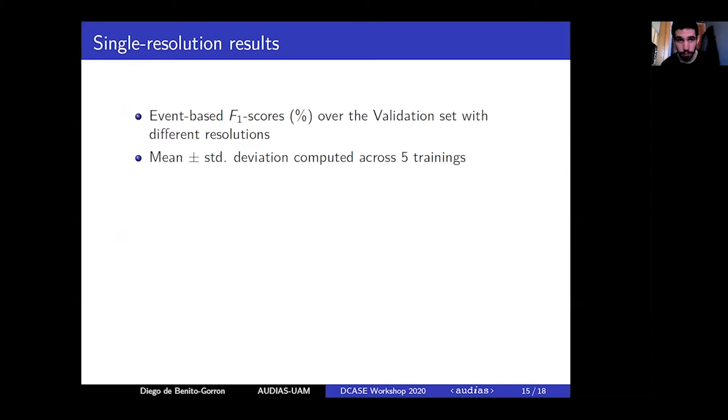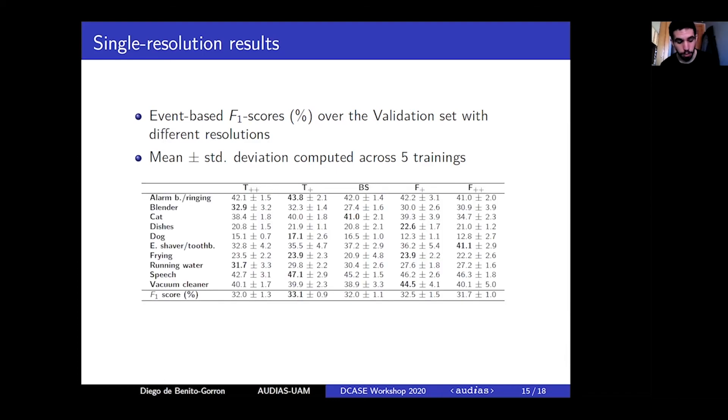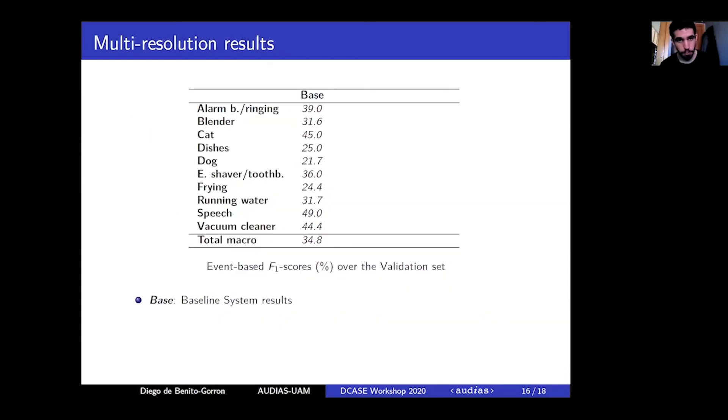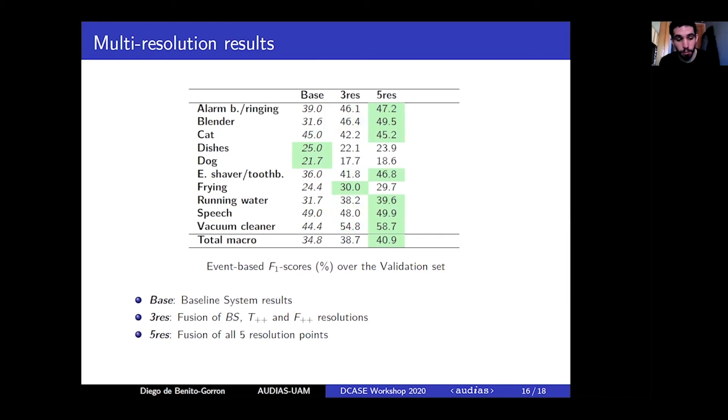Our first experiments involve single resolution models trained at each resolution point. The F1 results are provided in this table. The results show that different resolution points are more suited to detect certain event categories. The following table shows the results of the baseline system over the validation set as provided by the organizers. Our first experiment is a three-resolution system combining the baseline resolution with the two points that double the time resolution and the frequency resolution respectively, and it's able to outperform the baseline. The next experiment combines the five resolution points, obtaining further improvements.